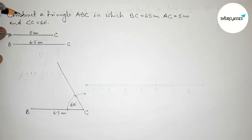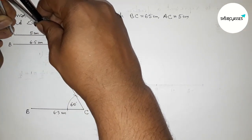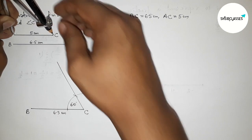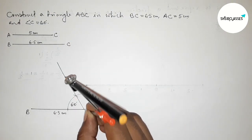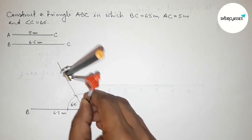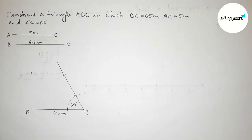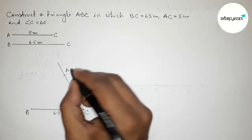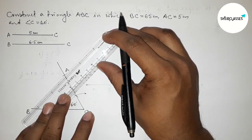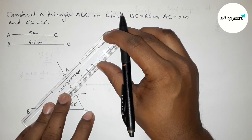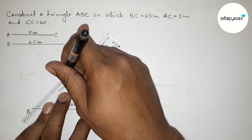Next, taking the length AC equals 5 centimeter with the help of a compass. Putting the compass on point C and cutting the arc to mark point A.